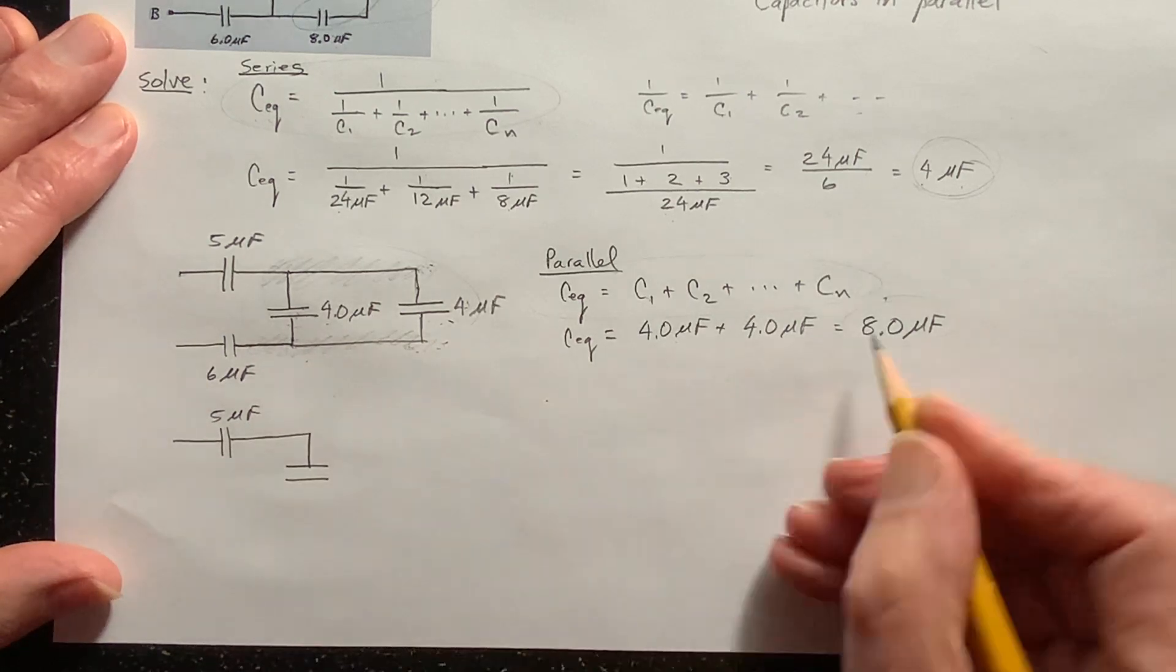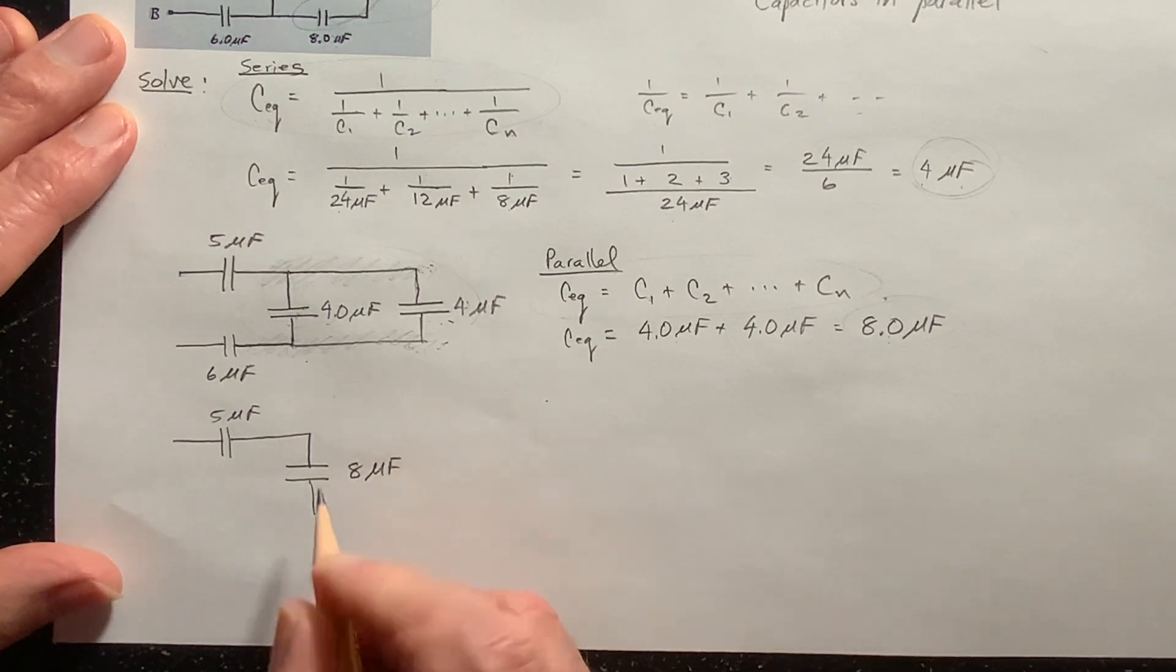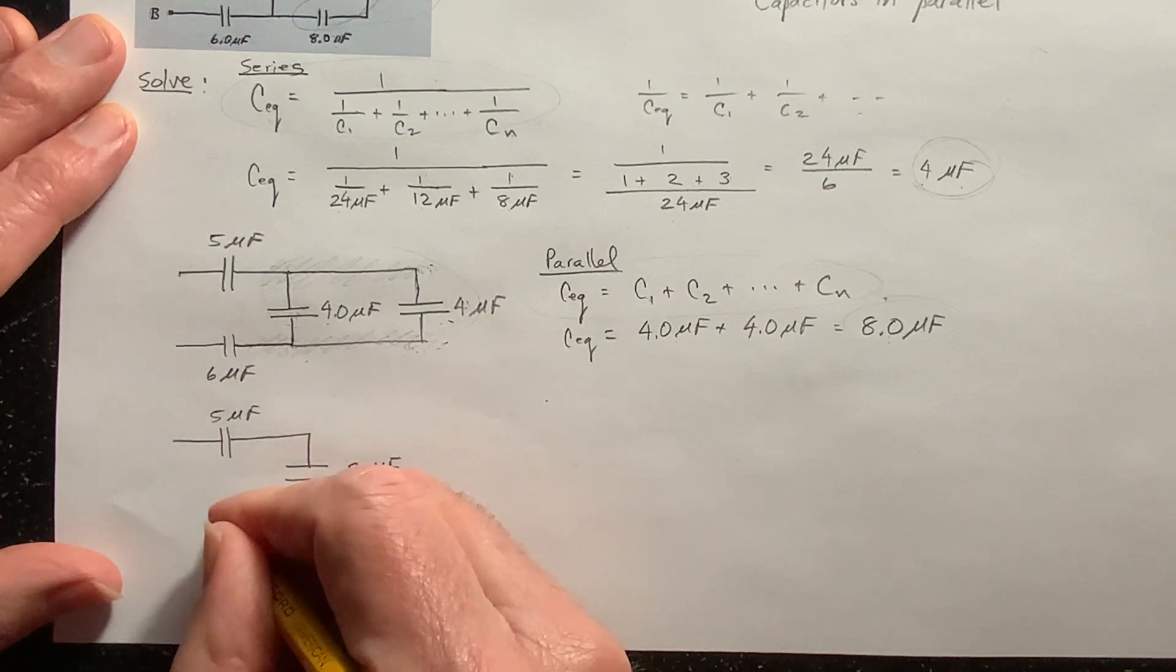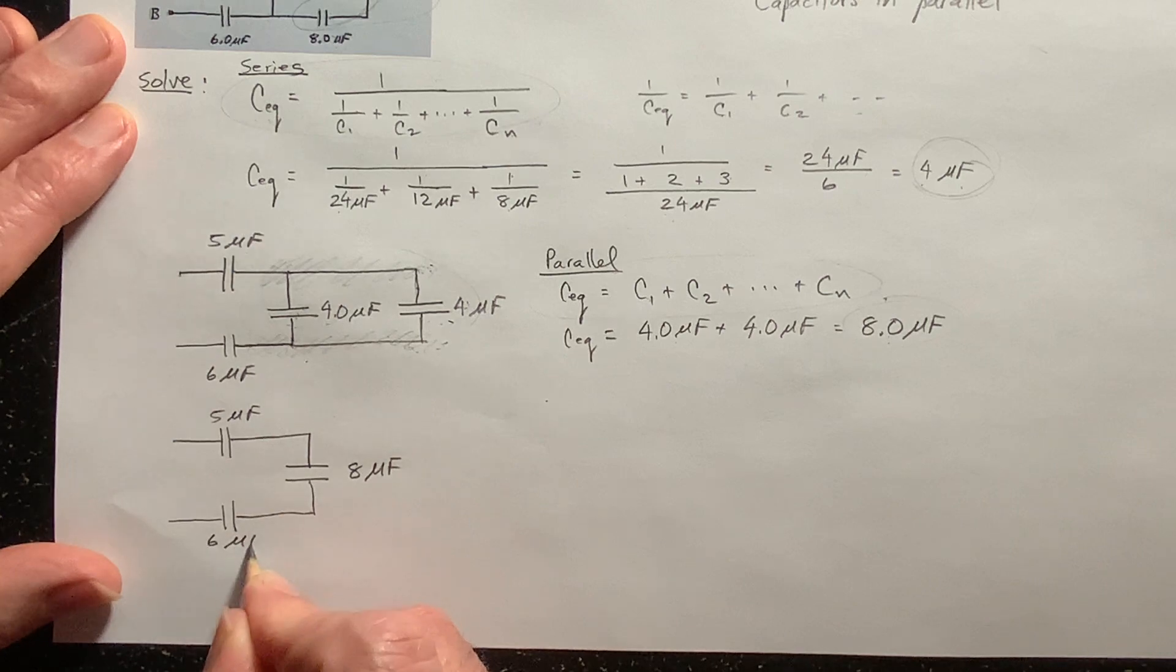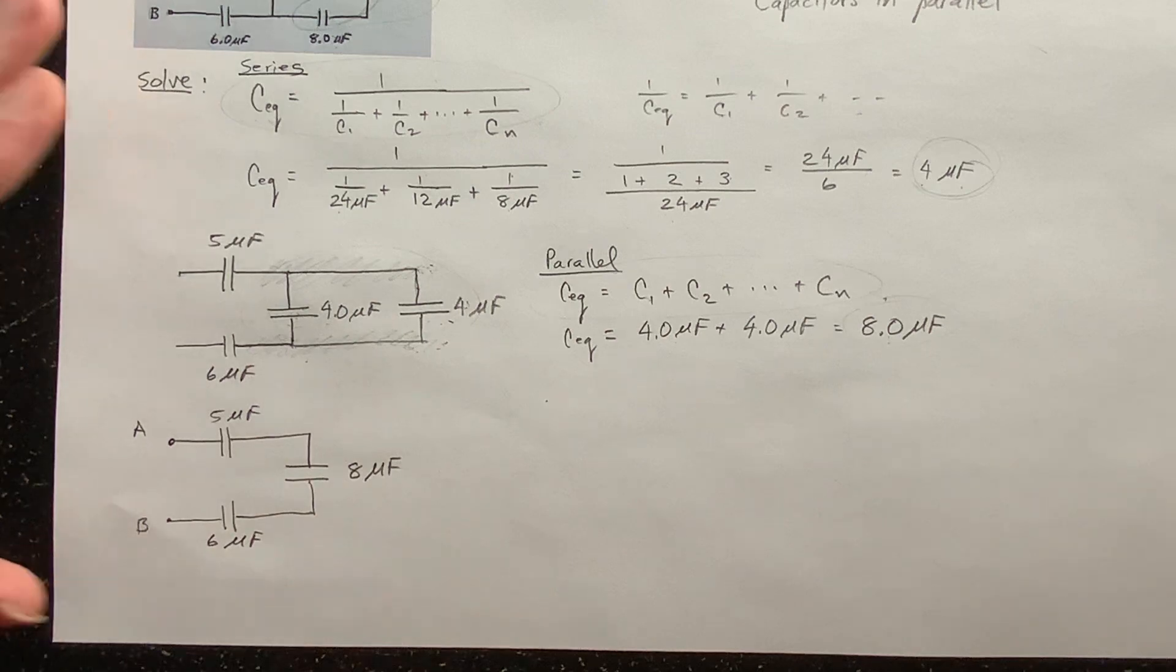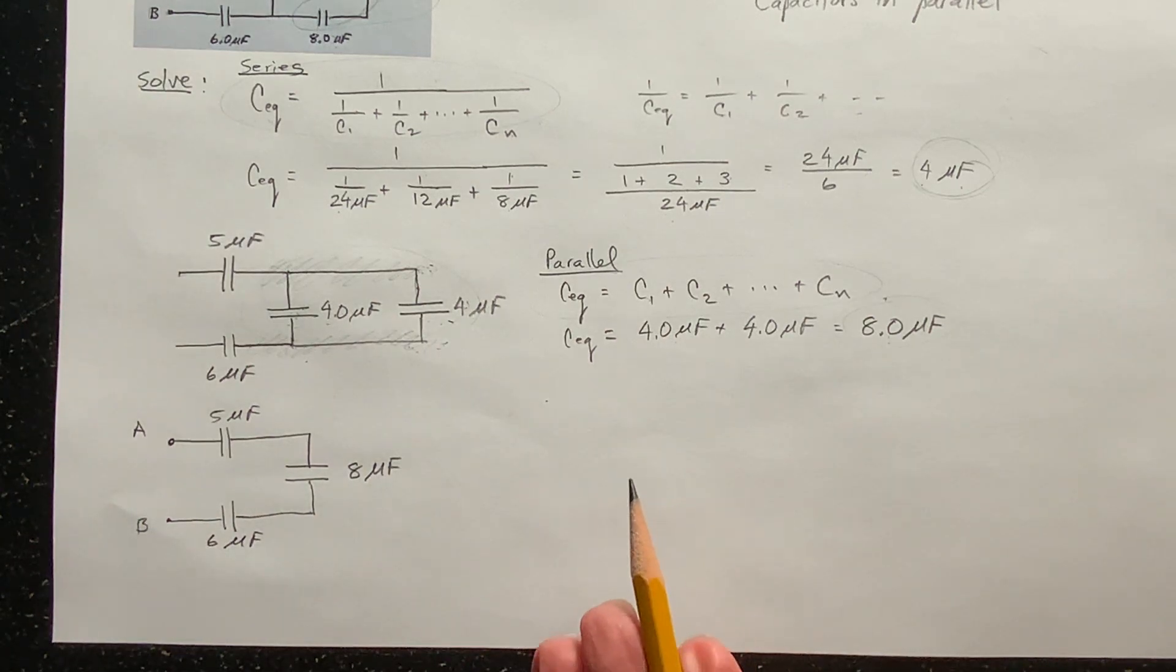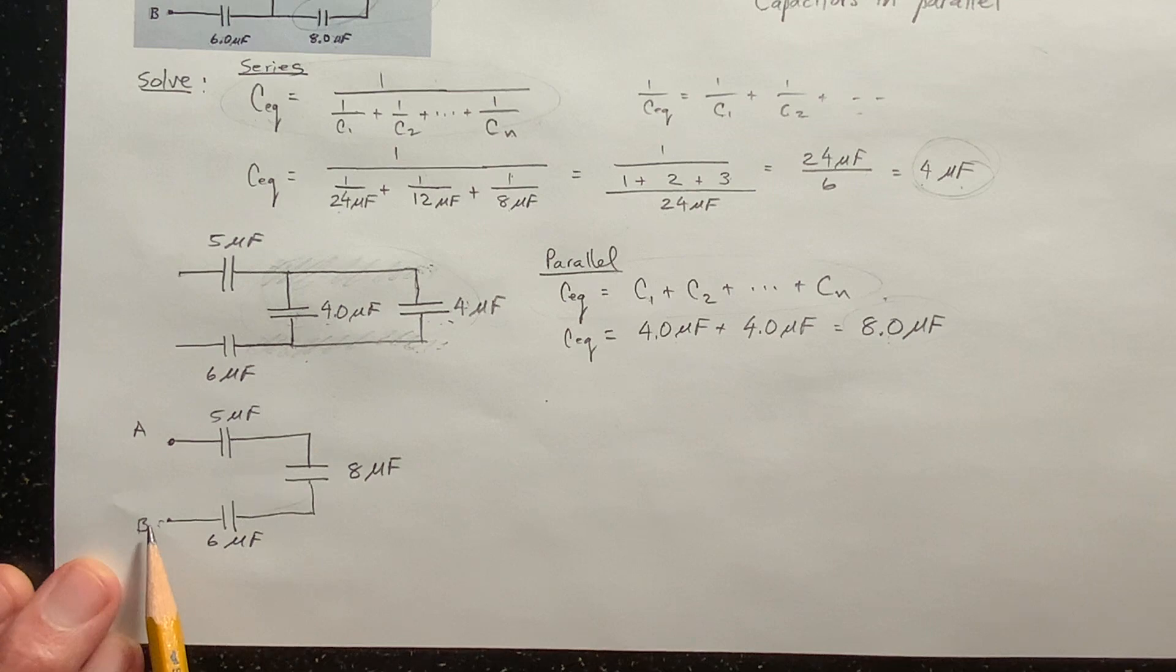So here we've got our five microfarad capacitor. And now I've got this eight microfarad capacitor. And then we come back down to the six, six microfarad capacitor. And here's A and here's B. So I think you can see now what to do. If we go from A to B, notice there's only one path. To get from A to B, there's only one path, which means these capacitors are in series.